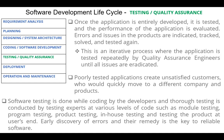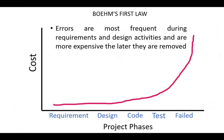Early discovery of errors and their remediation is the key to reliable software. According to Boehm's first law, errors are most frequent during requirements and design activities and are more expensive the later they are removed.